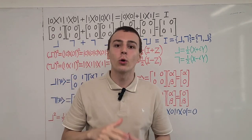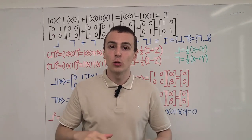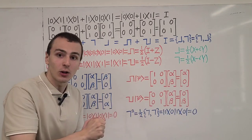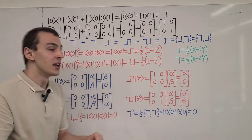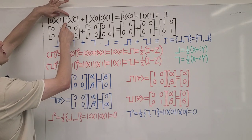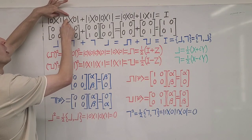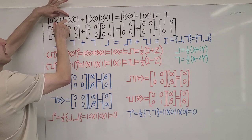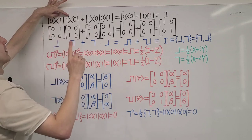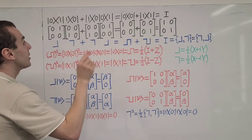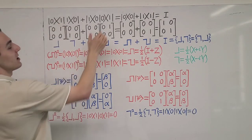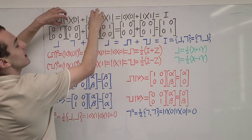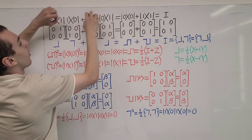These two states are orthonormal. Normalization means that if we take the inner product of a state with itself, we get 1. So the inner product of the state labeled by 1 with itself evaluates to 1 — a complex number, in fact a real number. This over here also evaluates to 1. So we can get rid of these factors because this is just multiplication by 1.